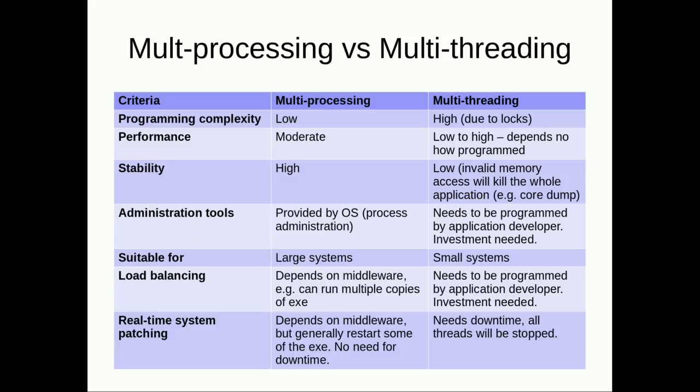In multithreading, you have to manage threads, watch for deadlocks, and handle other locking issues. For performance, multiprocessing has some overhead for IPC because messages are copied to queues and the OS delivers them to different processes. For multithreading, performance depends on the application — if threads don't need synchronization it can be fast, but shared work and memory locking can cause low performance.